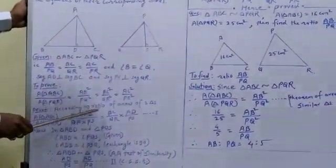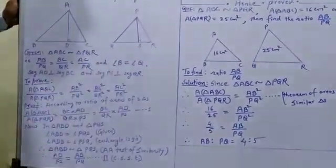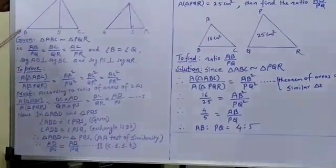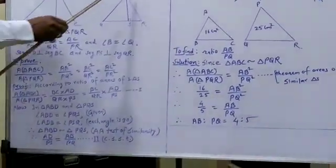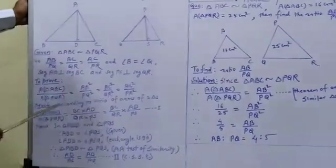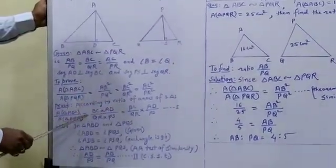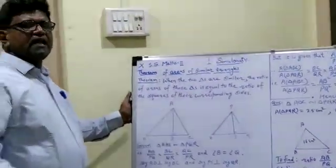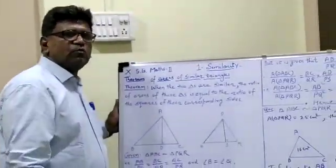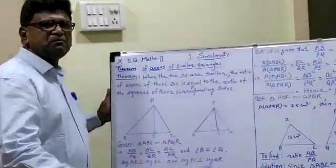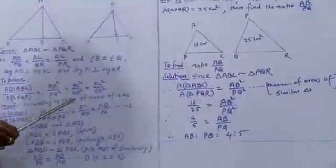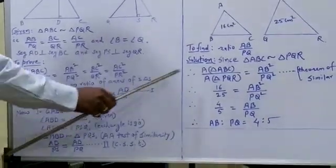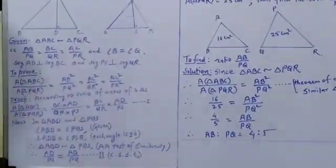According to the ratio of areas of two triangles, area of triangle ABC upon area of triangle PQR equals BC into AD upon QR into PS, which equals BC upon QR into AD upon PS. This is equation one.